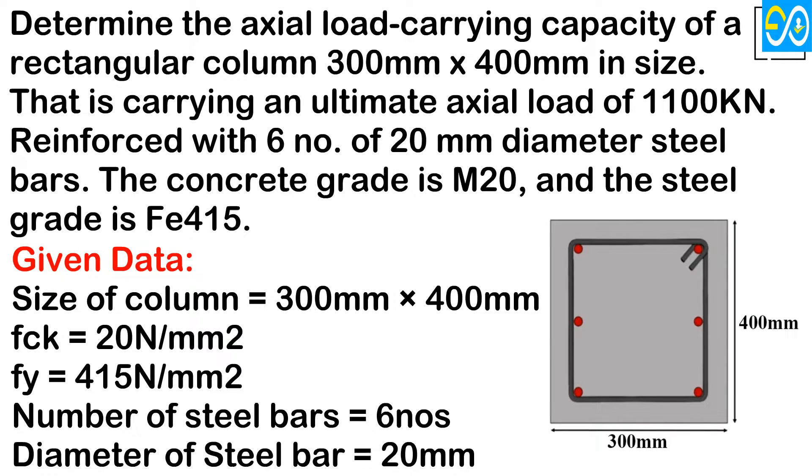Given data: size of rectangular column equals 300mm by 400mm, fck equals characteristics of compressive strength of concrete equals 20 N per square mm, fy equals yield strength or ultimate tensile strength of steel equals 415 N per square mm, number of steel bars equals 6, diameter of steel bar equals 20mm.